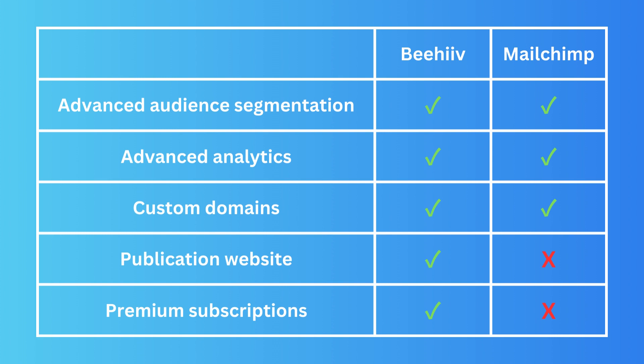RSS feed is also available on both Beehiiv and Mailchimp. Advanced audience segmentation is available on both platforms as well. For advanced analytics, both have it, but Beehiiv is a bit better — every action a subscriber takes within your email can be tracked. If they tap a link or open the email, you can see all of it.